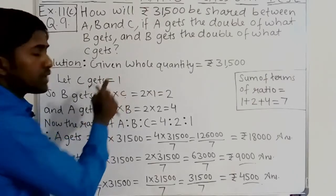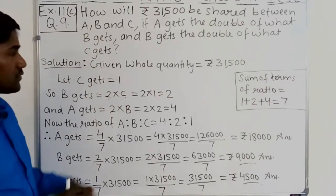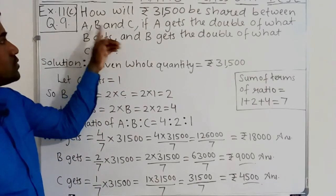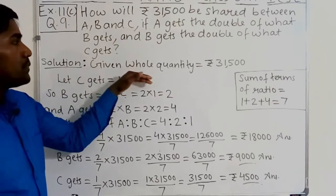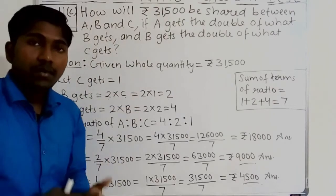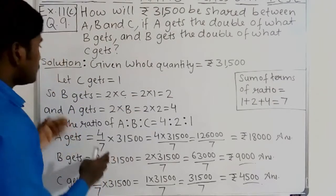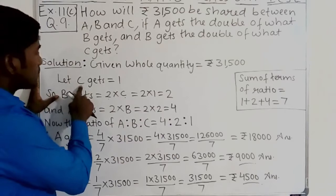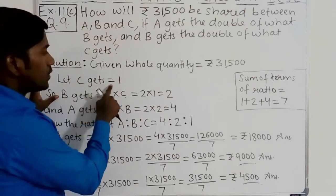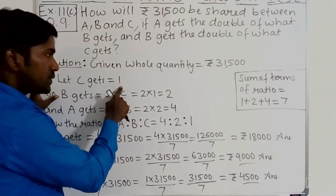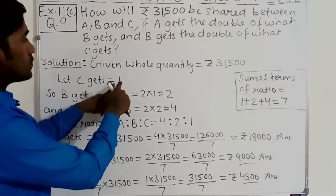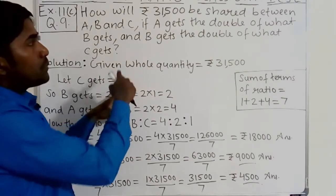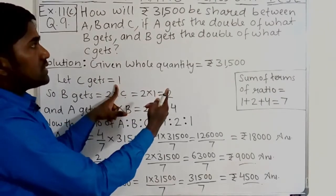First of all, we will find the ratio of A to B to C, then we will find the amount. Let C be equal to 1. So let's see how much B gets if C equals 1.